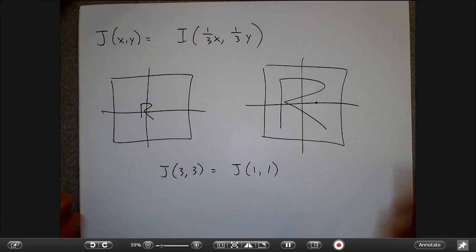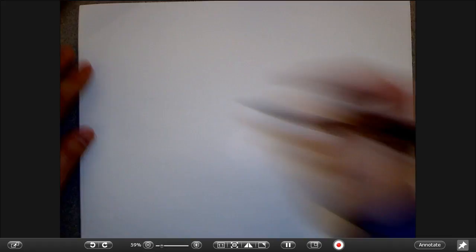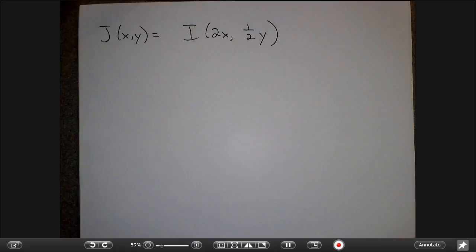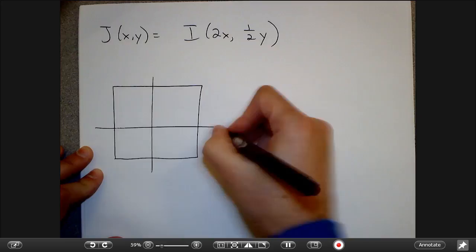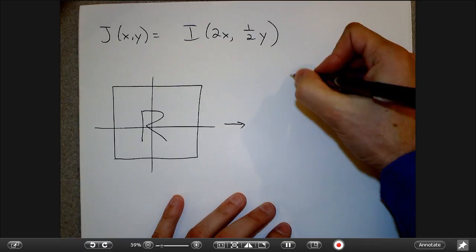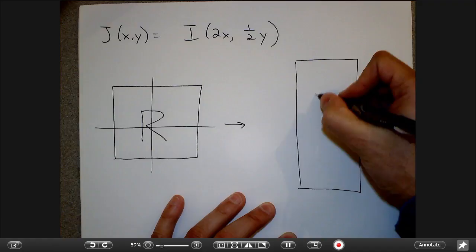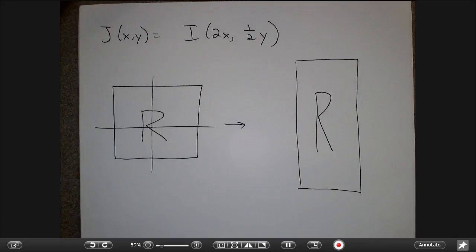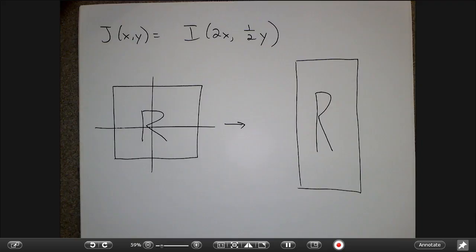You can combine these in different directions. For example, J of XY = I of 2X, one-half Y is going to be smaller in the X direction and bigger in the Y direction. So an image that starts out square turns into something skinnier in X but taller in Y — non-uniform changes in shape.